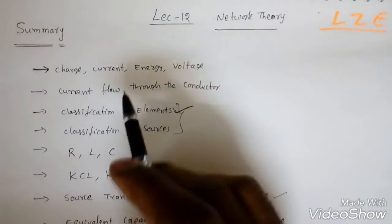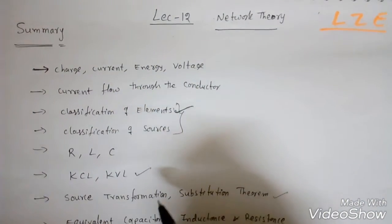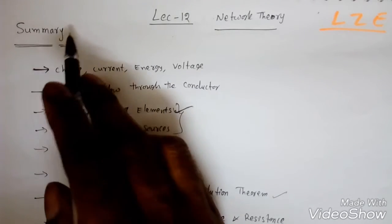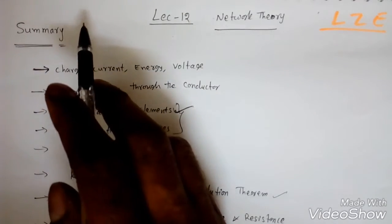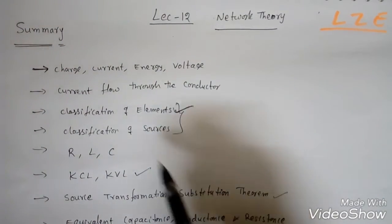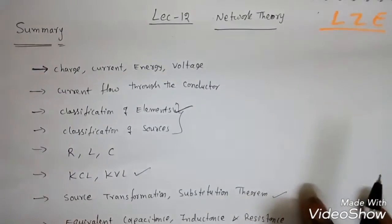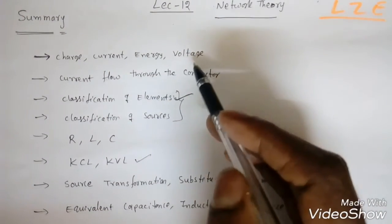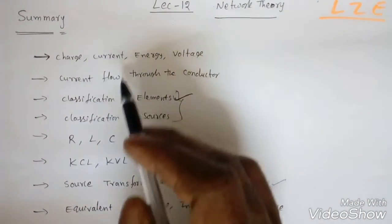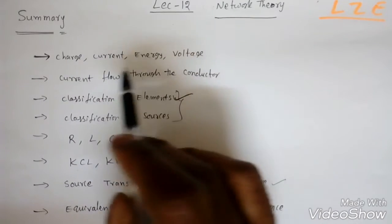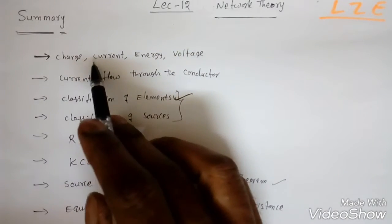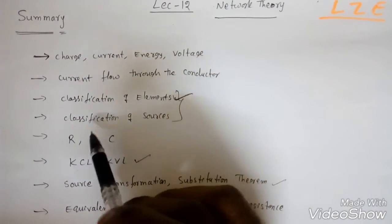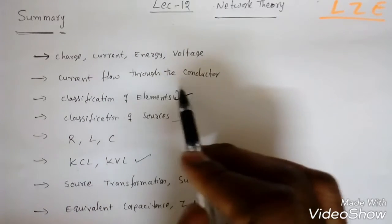This is Lecture 12 on Network Theory. In this lecture I'm going to give a brief summary of what we have seen up to now — from Lecture 1 through Lecture 11. In the first lecture we covered the basic concepts of charge, current, energy, and voltage.